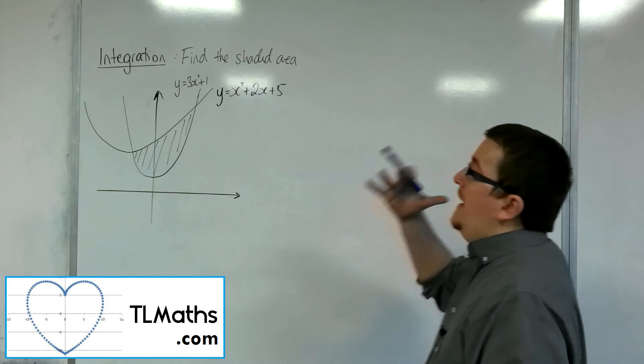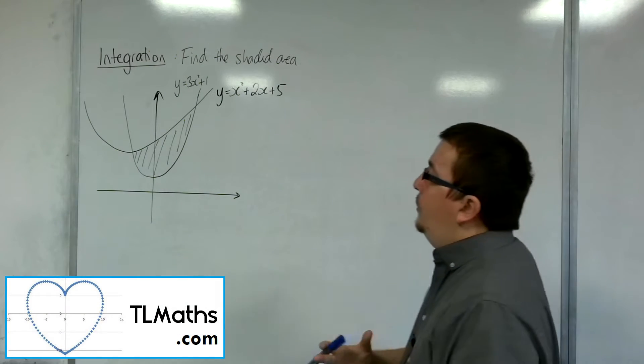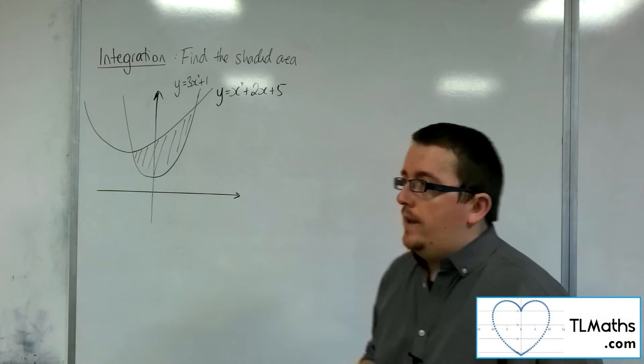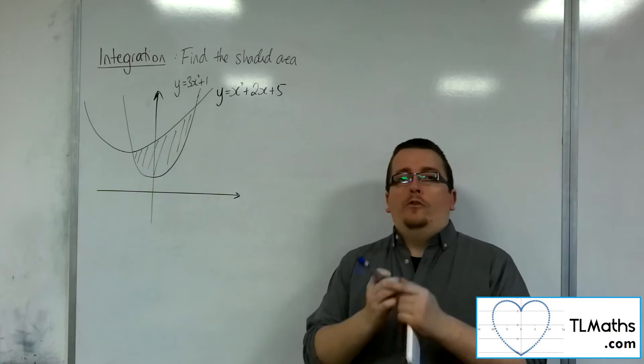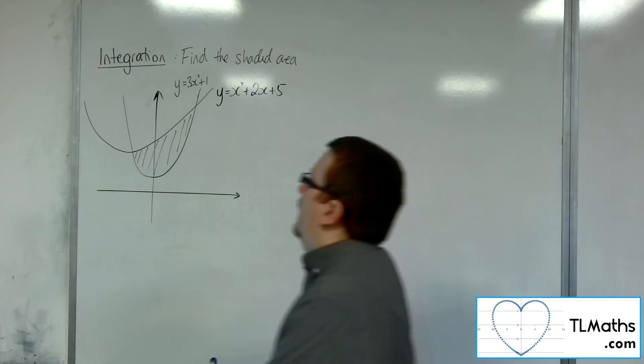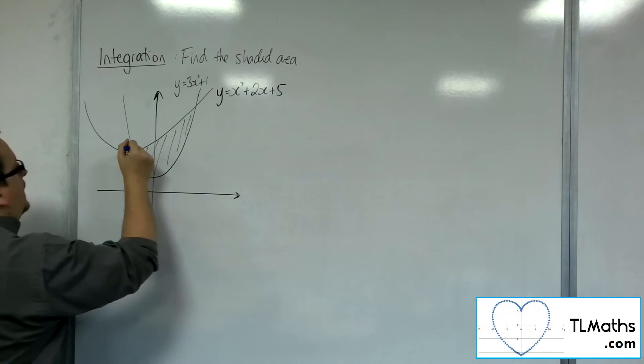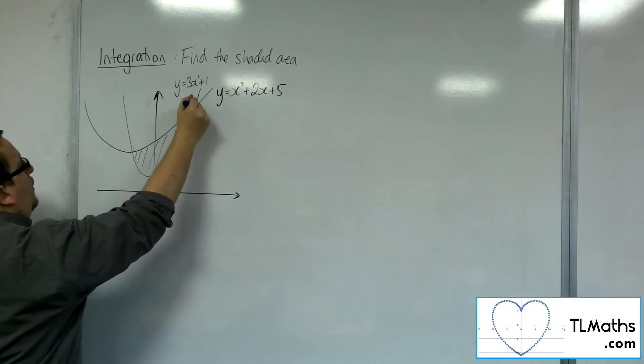So let's say I want to find the area between these two curves, this shaded region here. Now we've got an added problem here where we need to find those coordinates of intersection of those two curves. I need to figure out where those two points are.